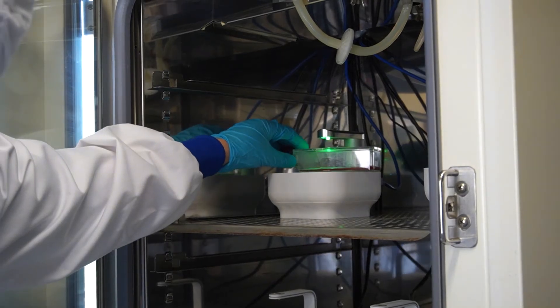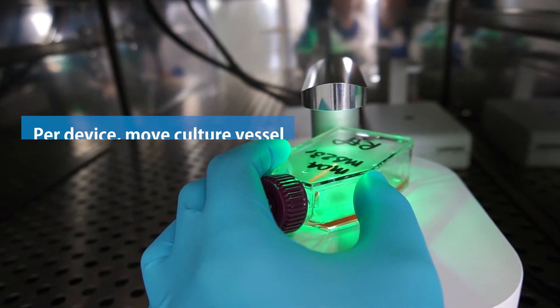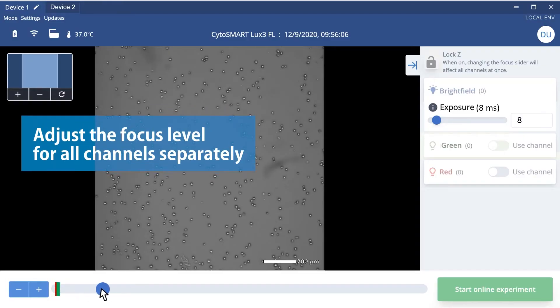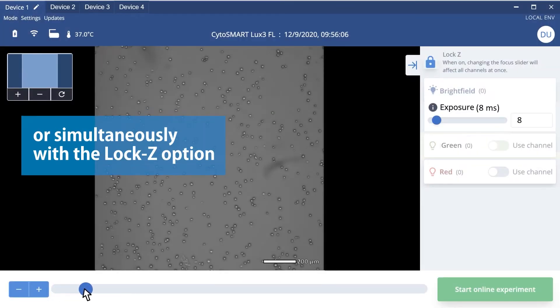Per device, move each culture vessel to image your desired location. Adjust the focus level for all channels separately or simultaneously using the lock C option.